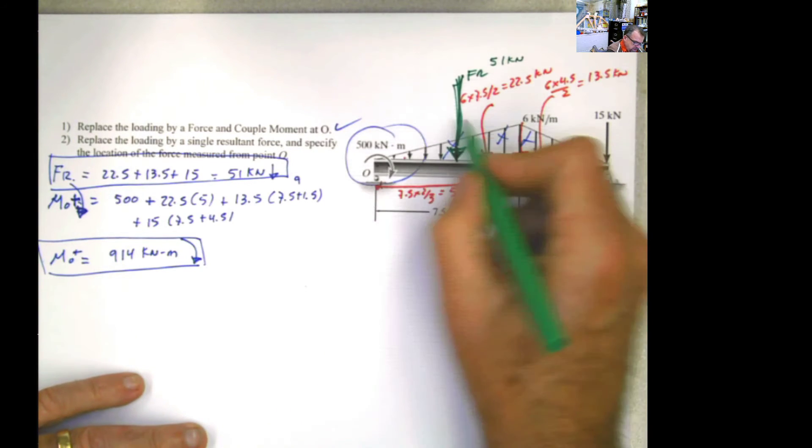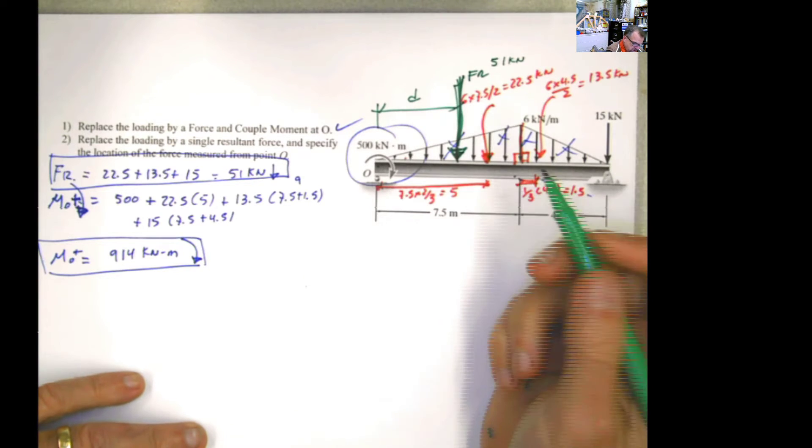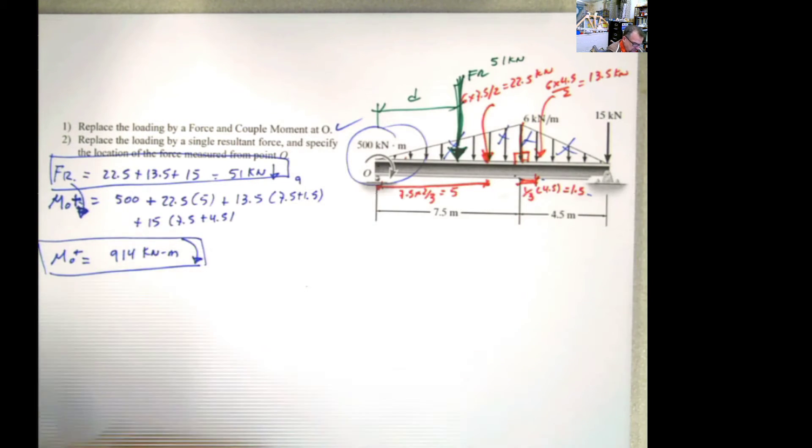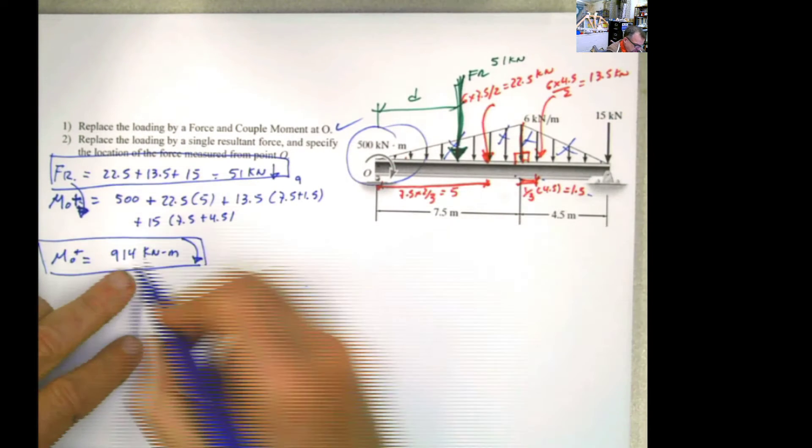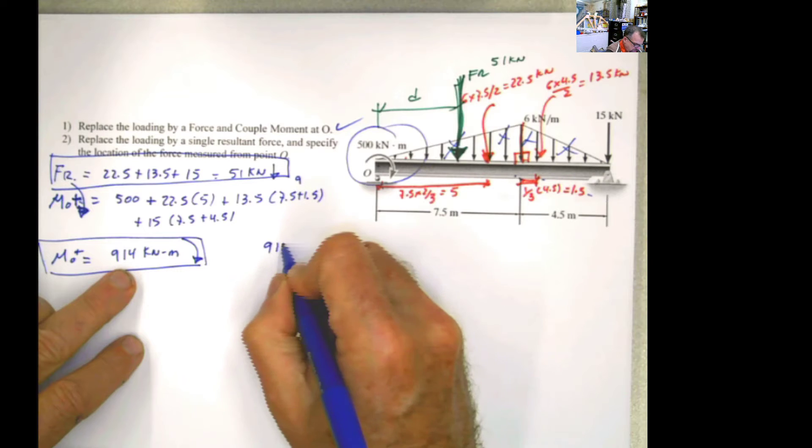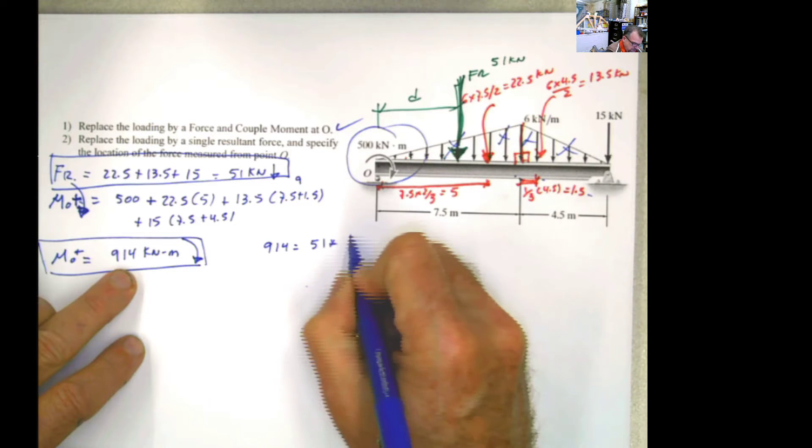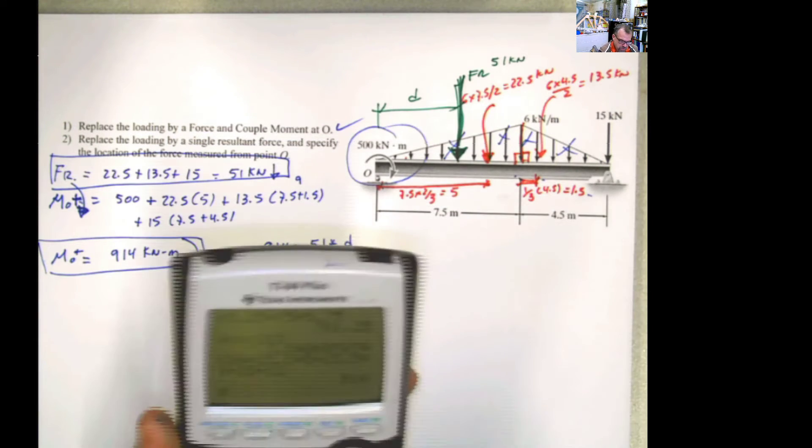But the issue is that that force placed at a distance d, which is our unknown, has to produce the same moment as all the other forces combined. So the only thing that we have to do is get this moment and say that this moment is equal to the resultant force multiplied by that distance d and solve for the distance d.